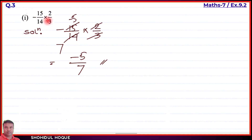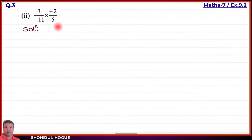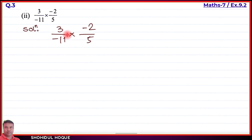Part number 2: 3 by minus 11 into minus 2 by 5. Here we have two minus signs — minus into minus cancels out and gives plus. So the negatives cancel each other. We have 11 in the denominator and 5, giving us numbers to work with.